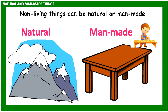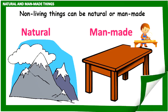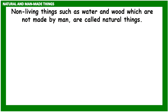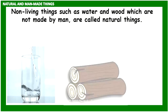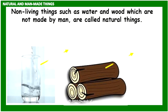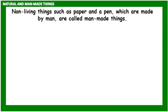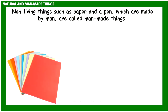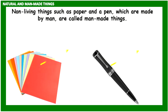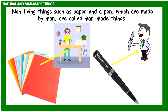Non-living things such as paper and a pen, which are made by man, are called man-made things. Note that all living things are natural.